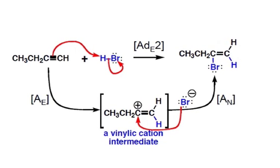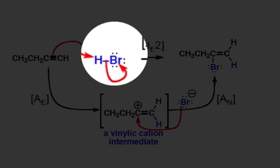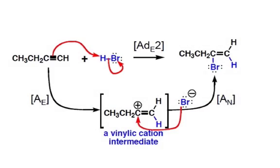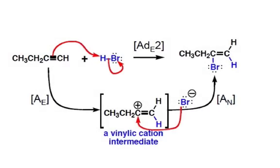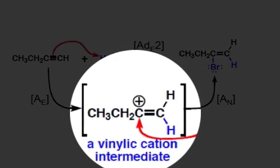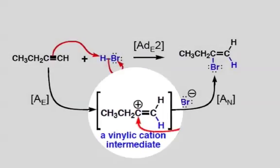If we take a look at the electrophilic addition of hydrobromic acid to an alkyne, we can see that it is very similar to what we saw with alkenes. Since our electrophile — the hydrogen of hydrobromic acid — does not have a lone pair associated with it, we'll proceed through an AE step followed by an AN step. After our AE step, the most substituted carbocation is generated, just as we saw with alkenes.